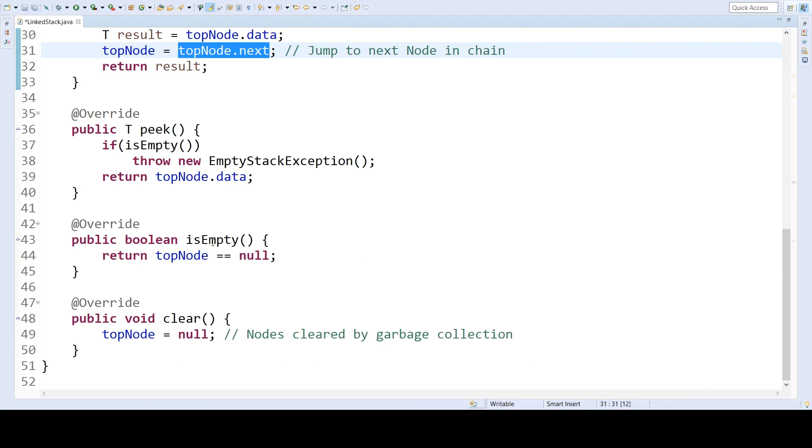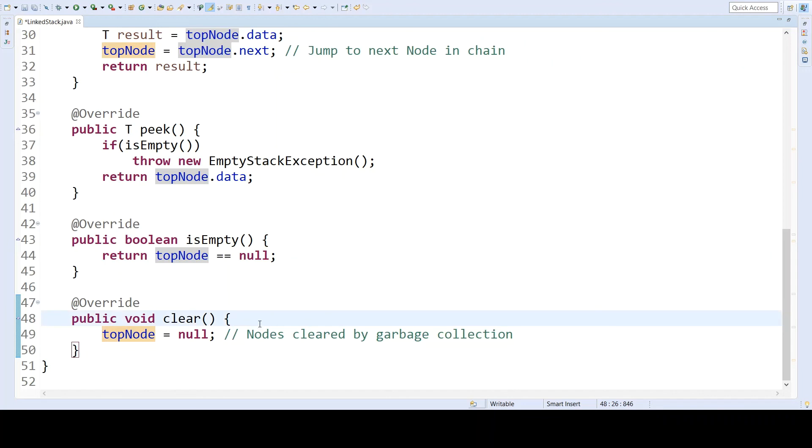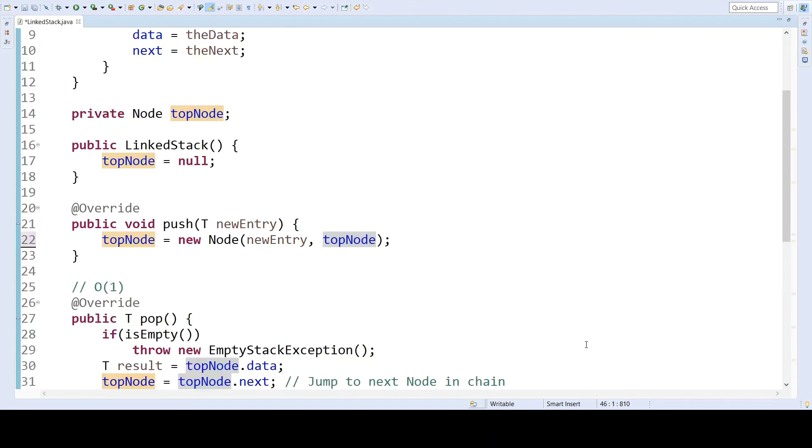And then we have two convenience methods. One checks if the stack is empty. We can tell by checking if the top node is null. And then to actually clear the stack, we simply set the top node to null. Now, once again, all of those remaining nodes still exist in memory. In fact, even the top node is still in memory, but we've just deleted the reference to it. Eventually, those nodes will be reclaimed by garbage collection. So if you are working in a language that did not support garbage collection, you would have to explicitly deallocate those nodes. But overall, this is a fairly simple stack implementation that doesn't take many lines of code to write.